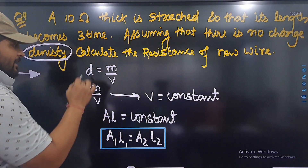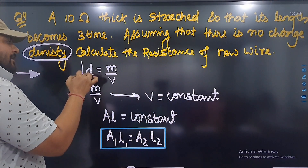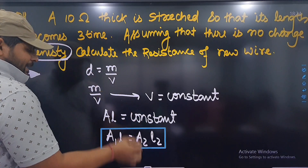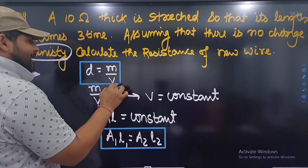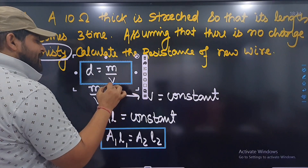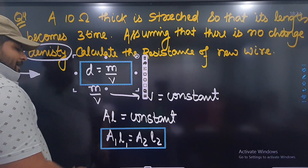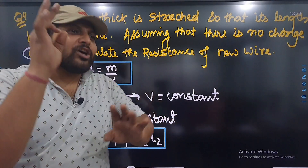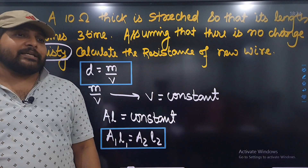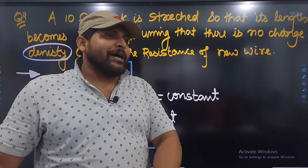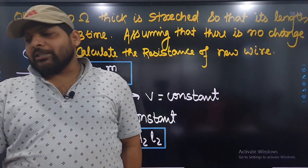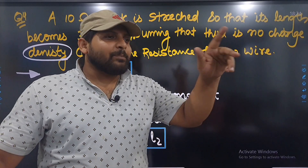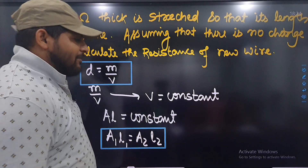यह logic ध्यान रखना है। हवा में कुछ नहीं लिखा — density constant लिखा है, density constant मतलब mass by volume constant। Mass सदैव constant होता है, इसका मतलब volume constant है। और जब volume constant होगा, area into length constant हो जाएगा। तो length अगर triple हुआ है तो area 1/3 हो जाएगा।